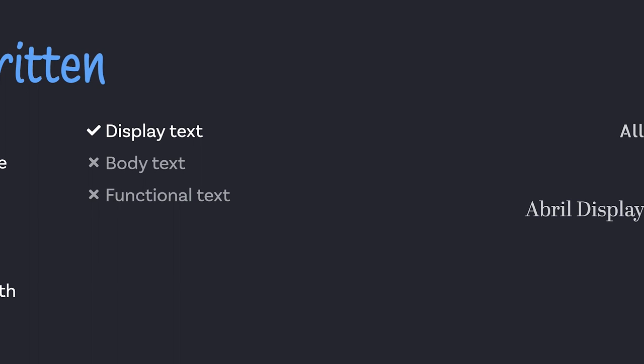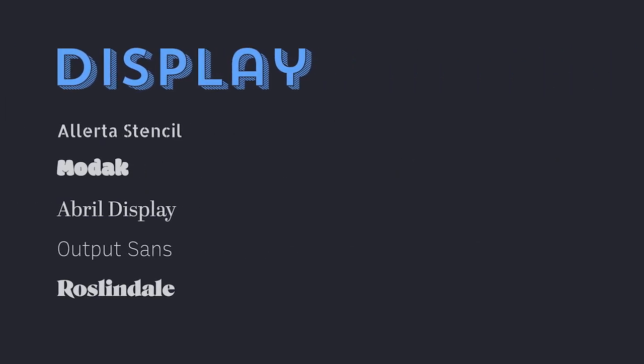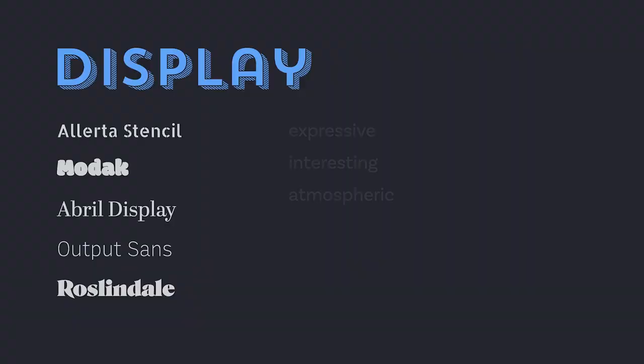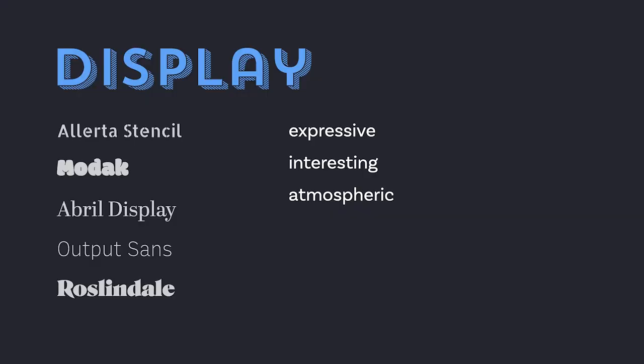Which brings us to the last one: display typefaces. Have fun — choose whatever you like. Expressive, interesting, atmospheric. These are very thematic kinds of typefaces you want to pick. It's hard to put them into any category at all, so use them for display text. Enjoy the vibe of the project. These are the kinds of things you see before you read them, so you can really set an atmosphere.